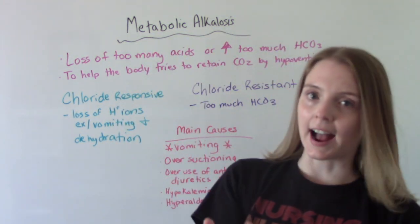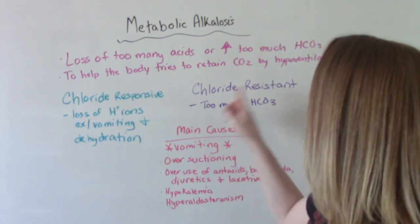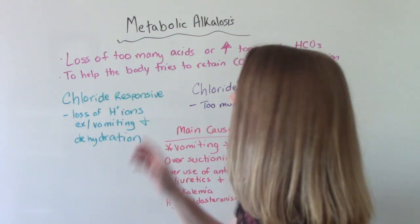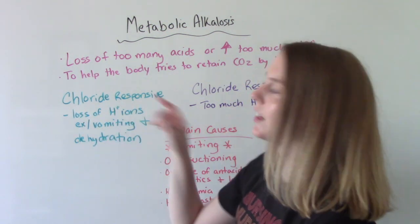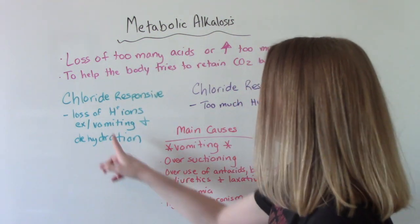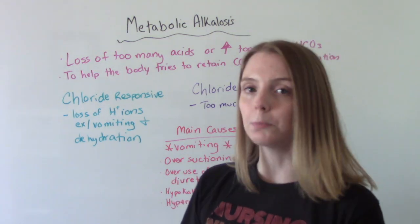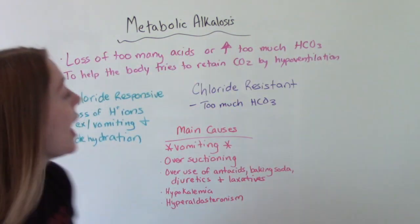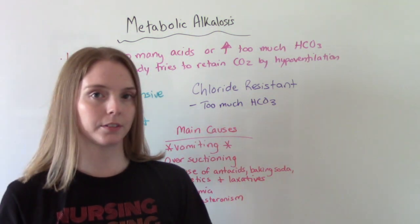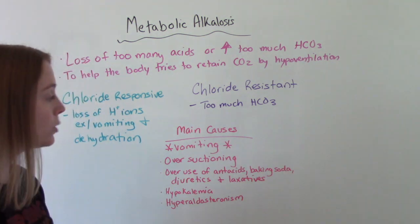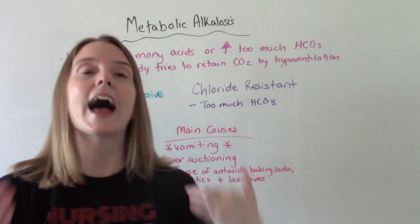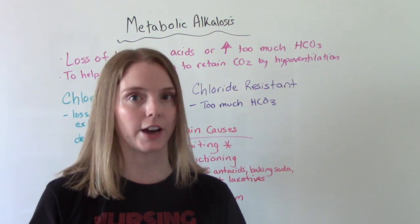There's two main kinds: chloride-responsive and chloride-resistant. Chloride-responsive is caused by the loss of hydrogen ions — so too much acid is being removed. Examples include vomiting, so throwing up too much, and dehydration. The most common cause is chloride-responsive — excess vomiting, where you're throwing up too much acid.